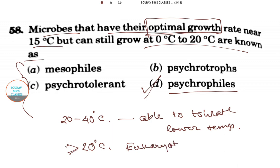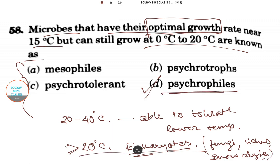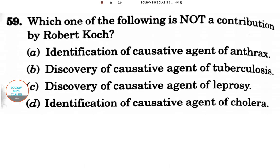Psychrophiles also include eukaryotes, which is quite unique. These eukaryotes include examples like fungi, lichens, and snow algae. So the answer is clearly option D.